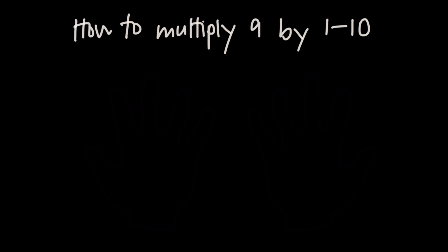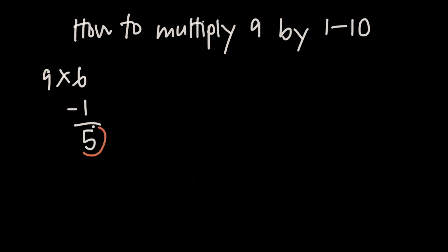If you don't want to use your hands, here's a technique that's a little more mathy. Let's say we want to multiply 9 by 6. We take the number that's not 9 — in this case 6 — and subtract 1 from it. So 6 minus 1 is 5, and 5 is going to be the first number of our answer.